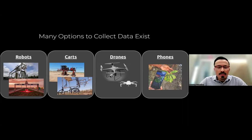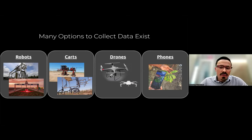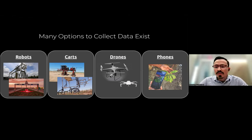Let's take a closer look at the field of plant science. There are many options to collect data — we might have robotic platforms, carts that move around the field and collect data on a variety of different crops, or we may fly drones over our fields. We might be interested in the thermal canopy temperature or multispectral data. And we might also have phones collecting information such as diseases or field observations.